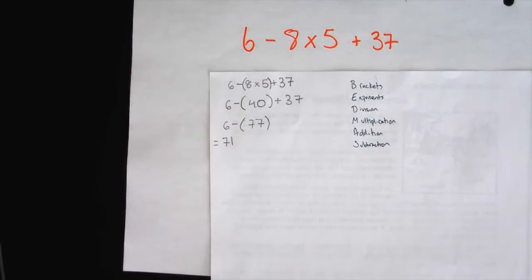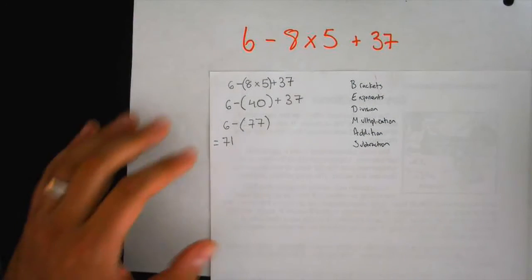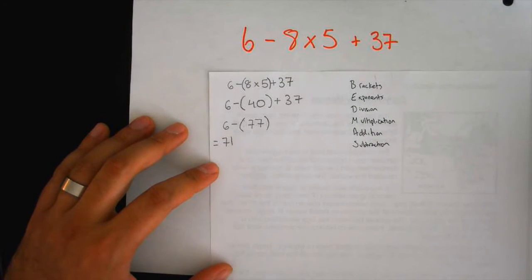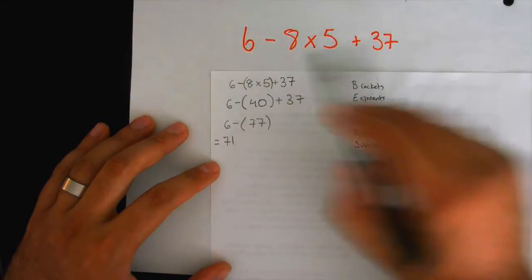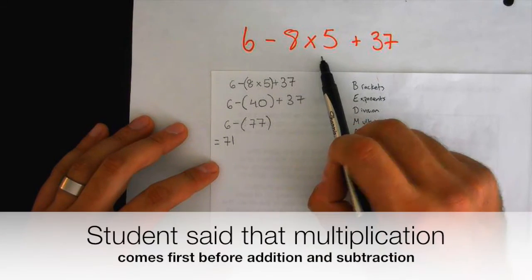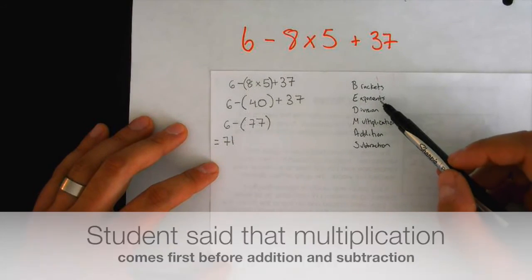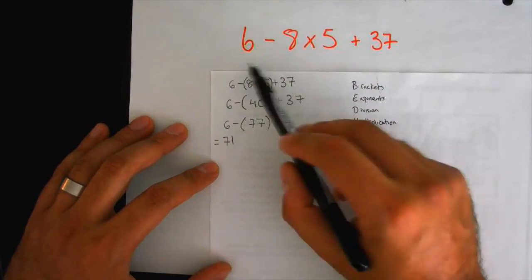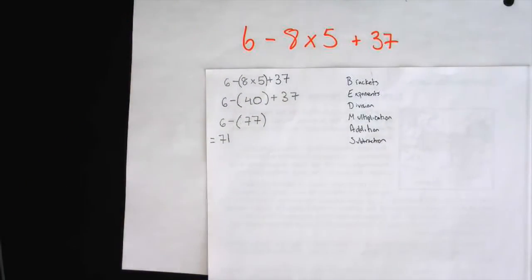So it is obvious that this group started off with, well they added brackets. Why do you think they added brackets? Right, because if you look at BEDMAS, multiplication comes before addition and subtraction. And what is being multiplied in this equation? 8 times 5.